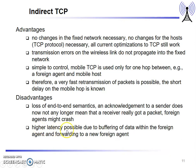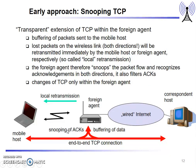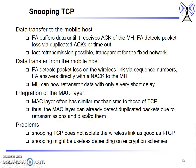Another approach is snooping TCP, where packets sent to the mobile host are buffered at the access point, which acts as a foreign agent. It snoops the packet flow between the mobile host and foreign agent in both directions, and retransmits packets if there is any packet loss. The problem is it does not isolate the wireless link as effectively as i-TCP, and snooping may be useless when encryption schemes are in use.